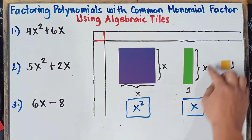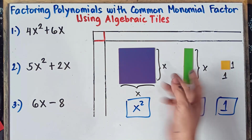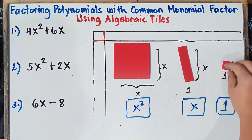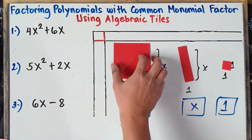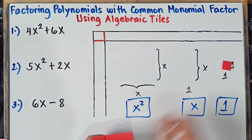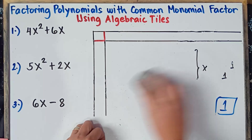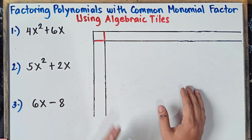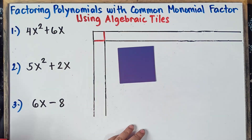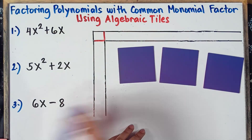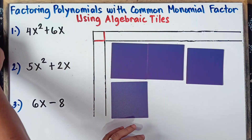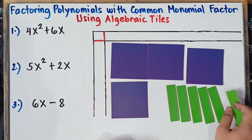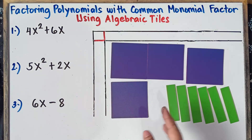This tile is x because the length is x and the width is 1. x times 1 equals x, so we just write x. This small tile is positive 1 because the length is 1 and the width is 1 — 1 times 1 gives positive 1. If you rotate any tile, you get its negative version. Now let's have example number 1 to understand how to factor using algebraic tiles. Our given is 4x squared plus 6x. We need to form a rectangle.